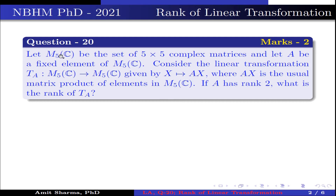The question is: let M5C be the set of 5 cross 5 complex matrices and let A be a fixed element of M5C. Consider the linear transformation T of A from M5C to M5C given by X maps to AX, where AX is the usual matrix product of elements in M5C. If A has rank 2, what is the rank of TA?